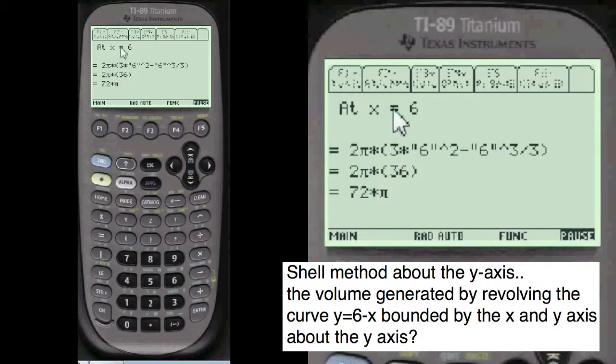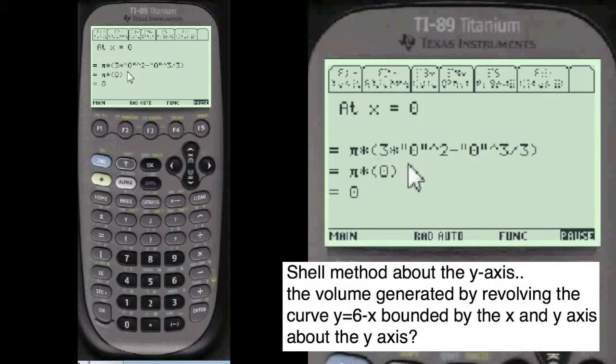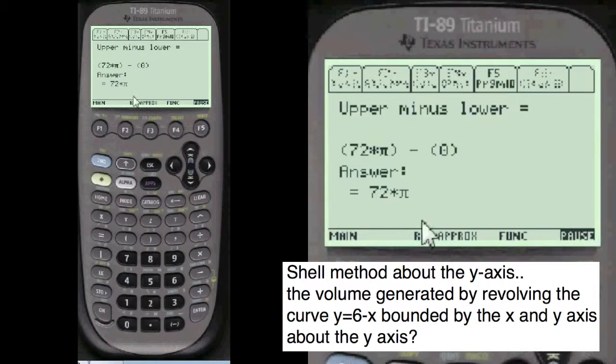And as we substitute at x equals six, the limits, it's 72 pi. And x equals zero, we get zero. Upper limit minus lower is 72 pi.